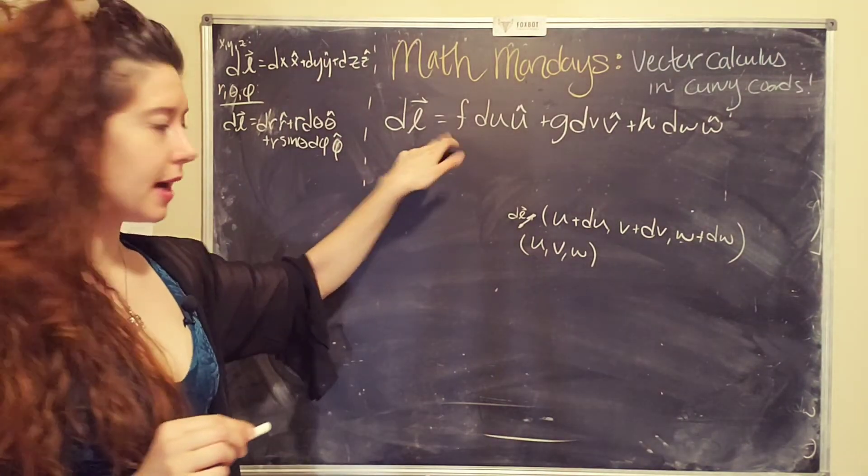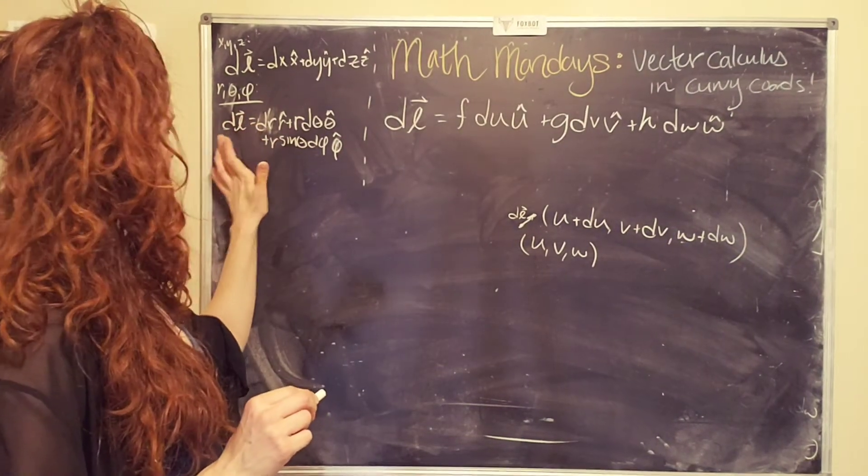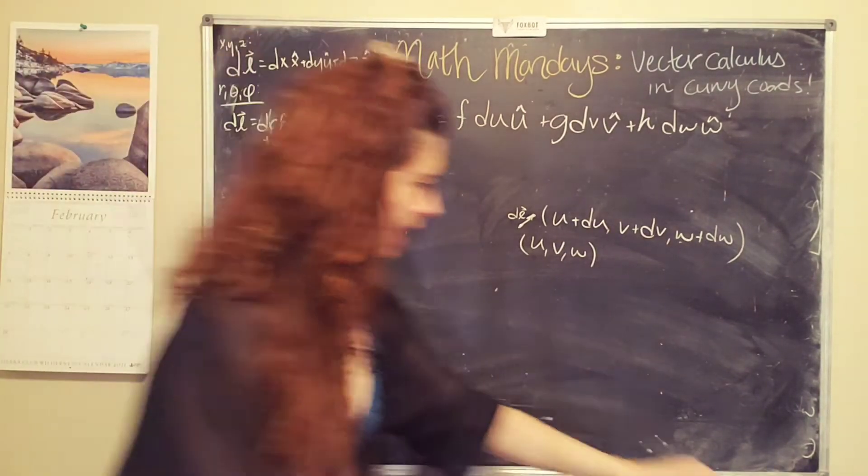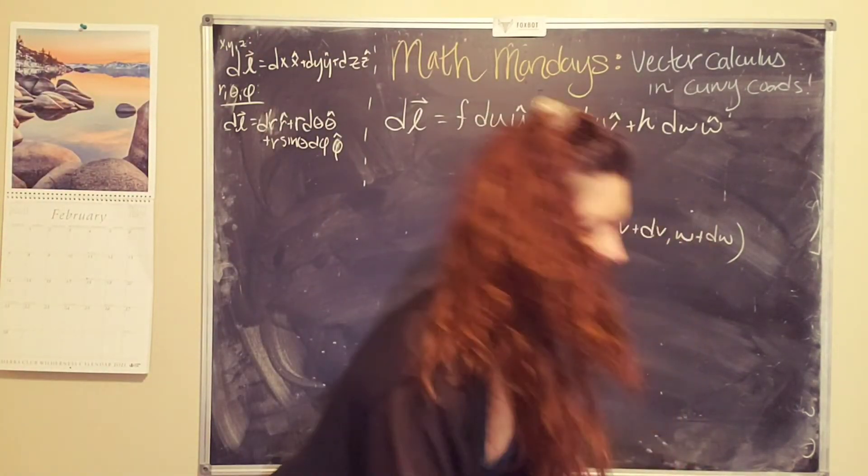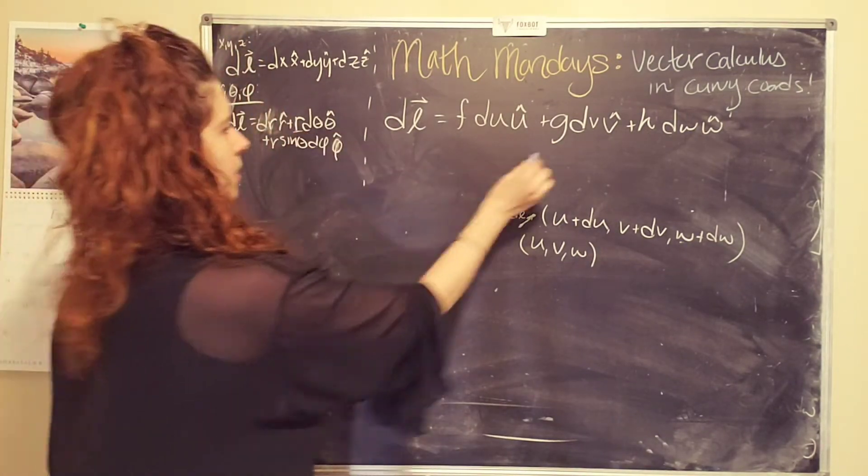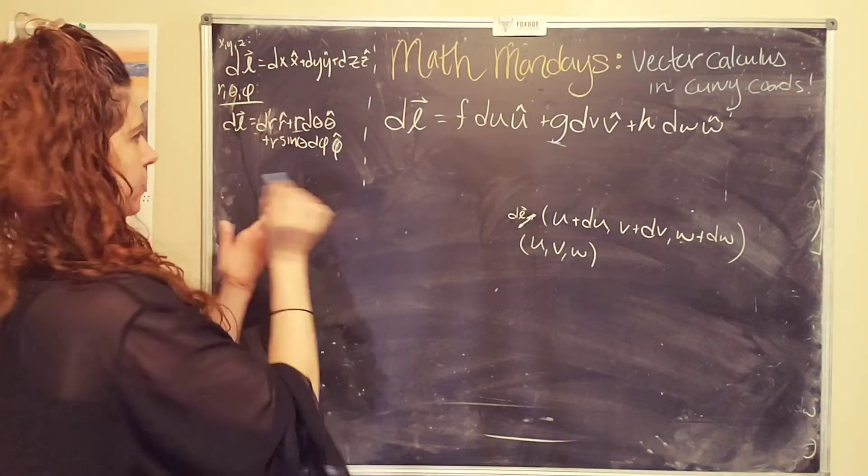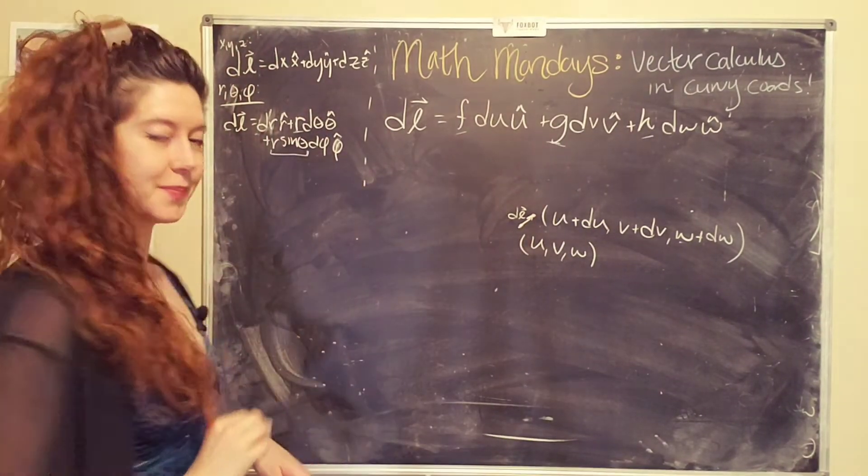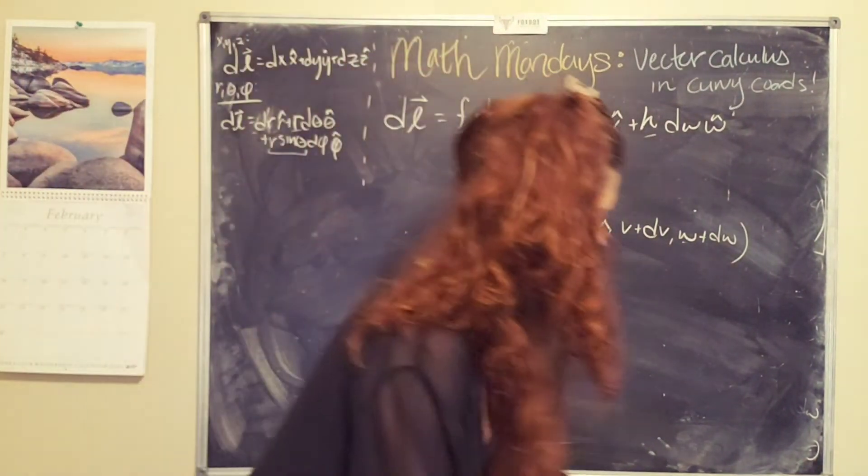And so then in this case, my f is just one, there's nothing in front of this dr, my g is just r. We have r, which is g, we have a one in front of this dr, which is f, and then h is going to be r sine theta. Cool. So we'll table that. We're still going to need this.